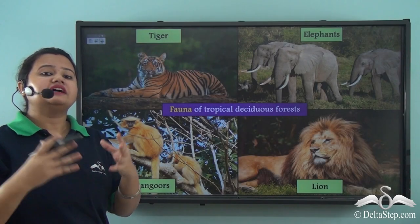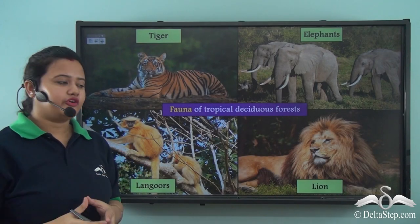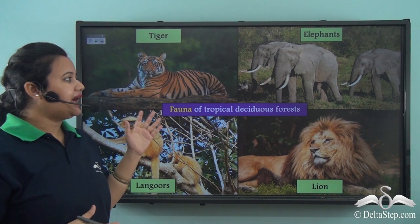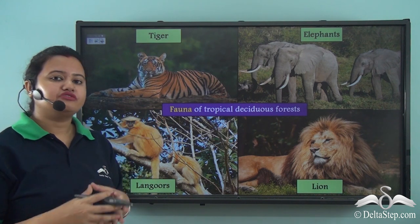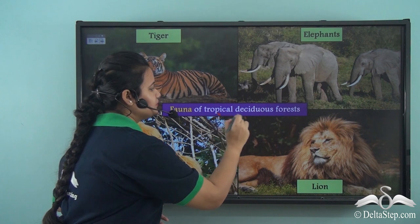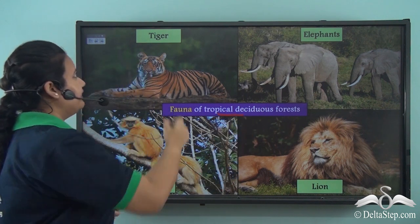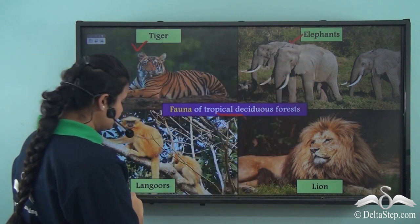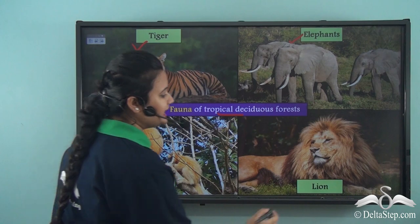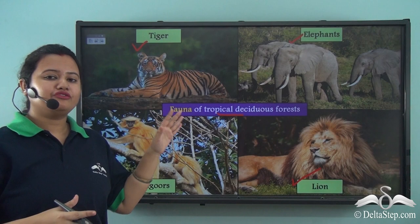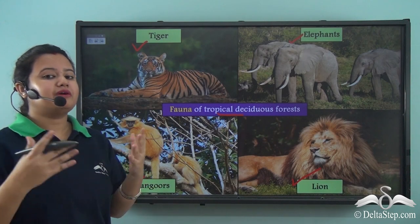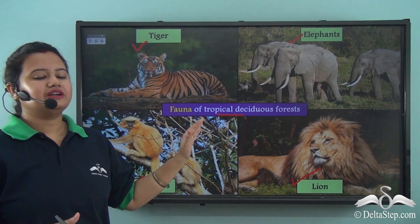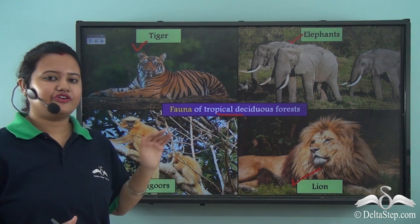The deciduous forests are also rich in wildlife. Some of the animals found in the tropical deciduous forests are tigers, elephants, langurs, and lions. Apart from them, many other animals are also found in these tropical deciduous forests.